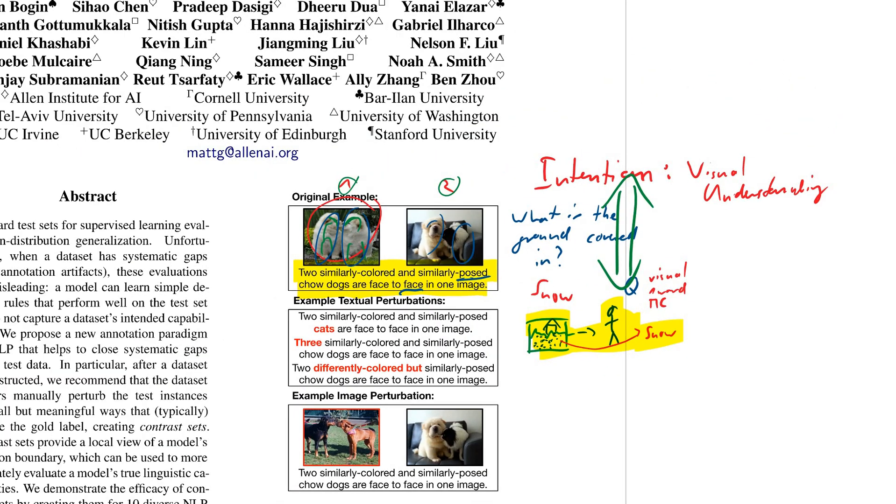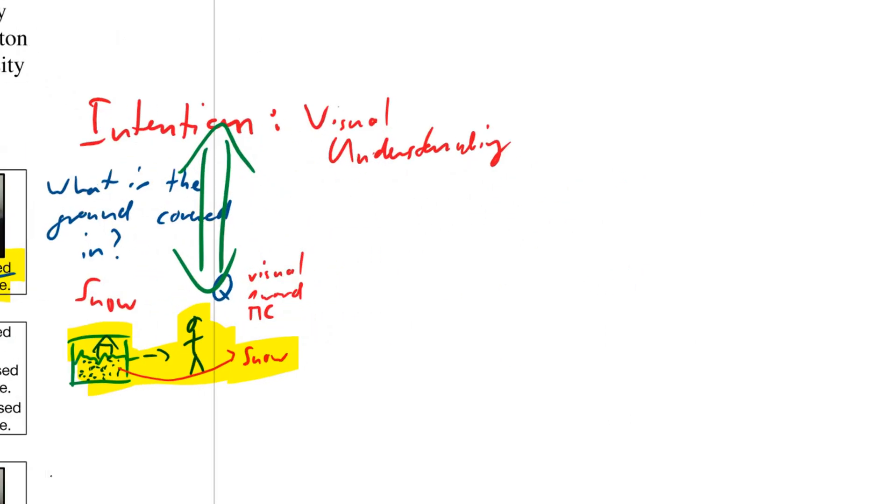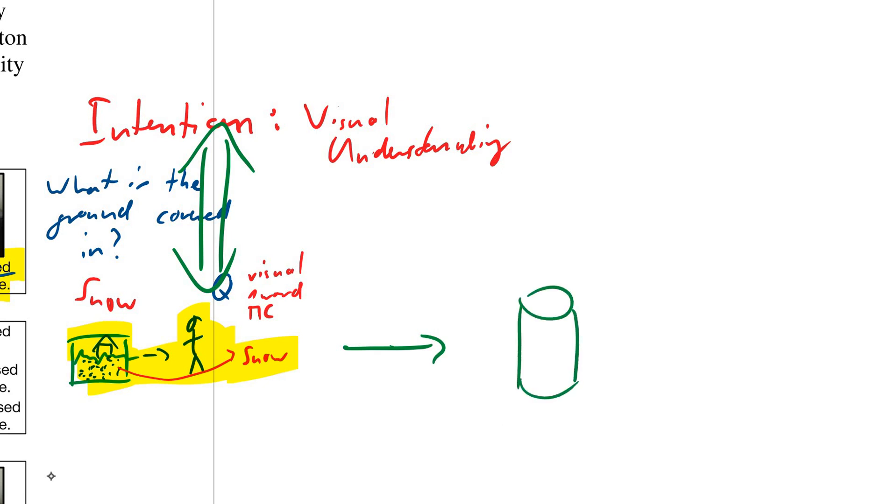So the authors are trying to address this with what they call contrast sets. Now they say okay you get out of this process here you get a data set, you get a training data set and a test data set, maybe here a smaller test data set. What they say is what we should do is we should additionally have these things called contrast sets. So this is train, and this is test. And usually these two come from the same distribution. You simply make them and then you split them somehow and you take the test from the train. But these here are not from the same distribution. This is the contrast.